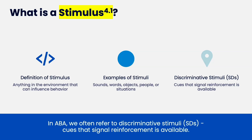So, what's a stimuli? It's anything in the environment that can influence behavior. You can break all the stuff that comes before behavior into a couple of things: there's our prompts, there's our antecedents like our environmental modifications, and stimuli are both of those — it's a term for all of that. Examples of stimuli are sounds, words, objects, people — anything within the environment. A discriminative stimulus signals that reinforcement is available if you respond in a certain way, and we call those our SDs.